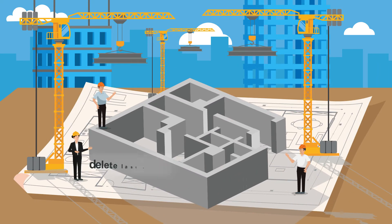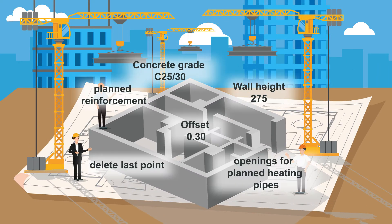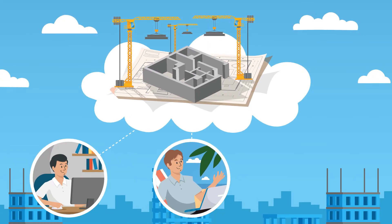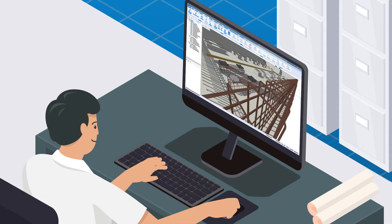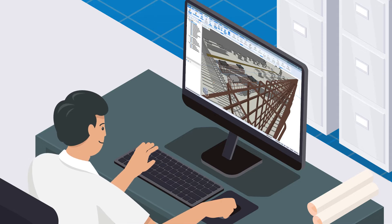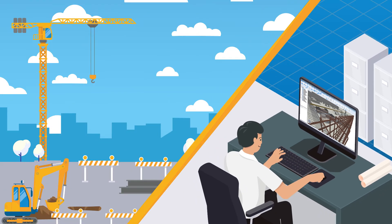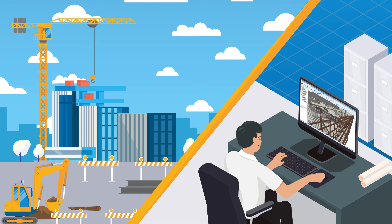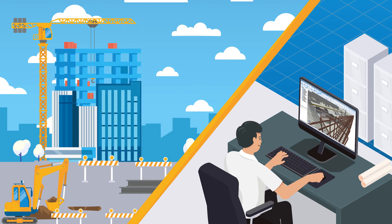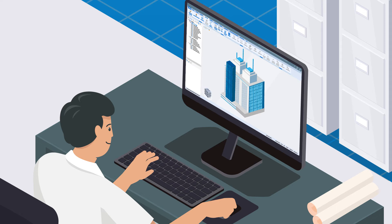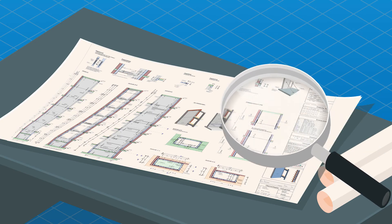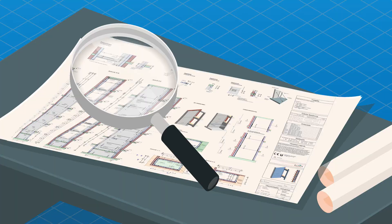Different team members can work on a 3D model simultaneously, whether in the office, home office, or in the branch. Our innovative cube reinforcement sets future trends in model-based reinforcement planning. Subsequent changes can be made more effective and quicker. Stracon also allows you to choose between 2D and 3D, with a focus on excellent plan presentation.